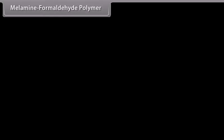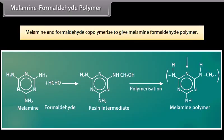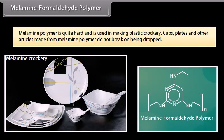Melamine and formaldehyde co-polymerize to give melamine formaldehyde polymer. Melamine polymer is quite hard and is used in making plastic crockery; cups, plates and other articles made from melamine polymer do not break on being dropped.